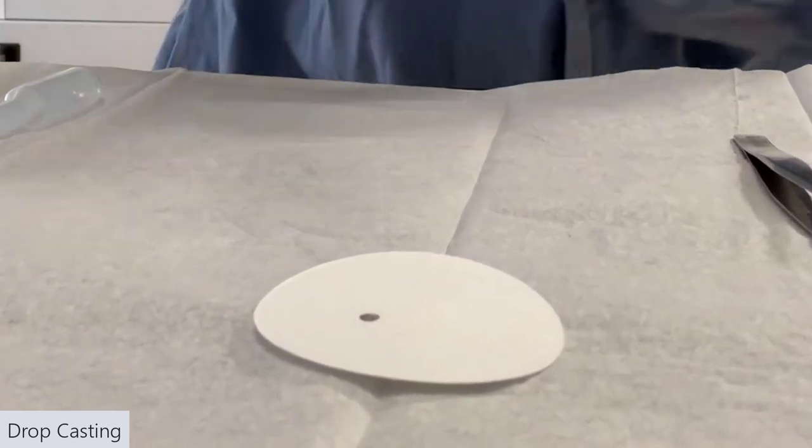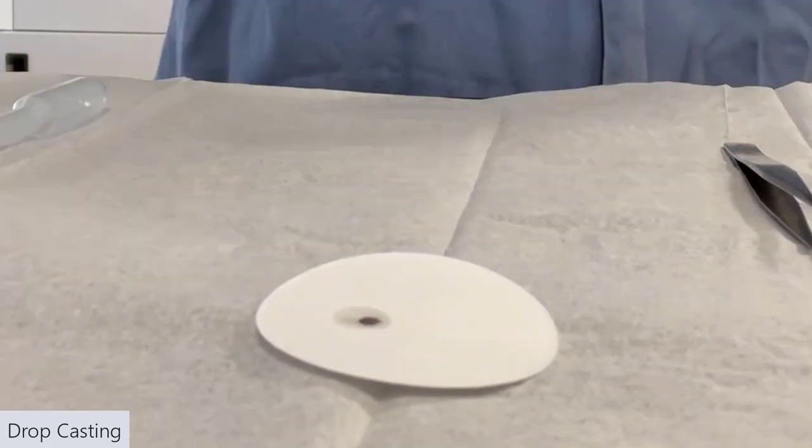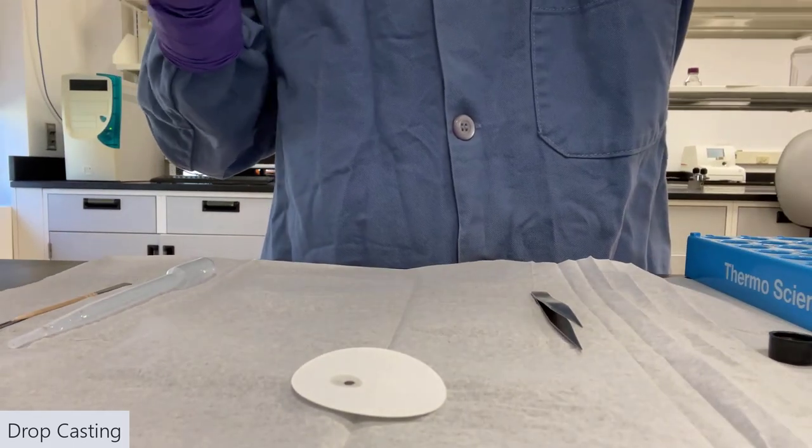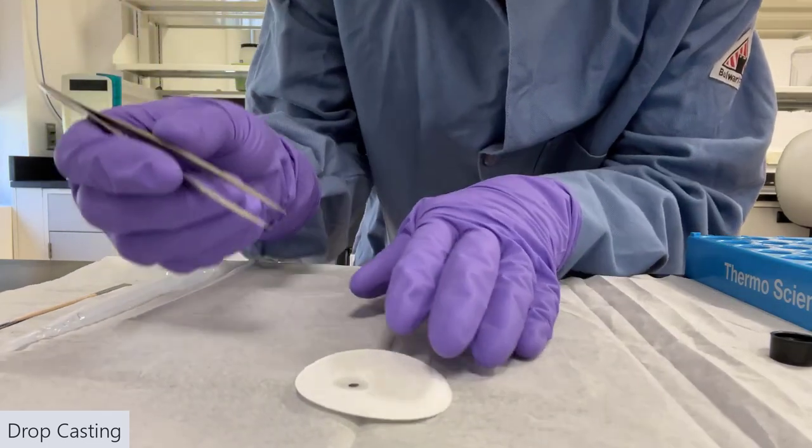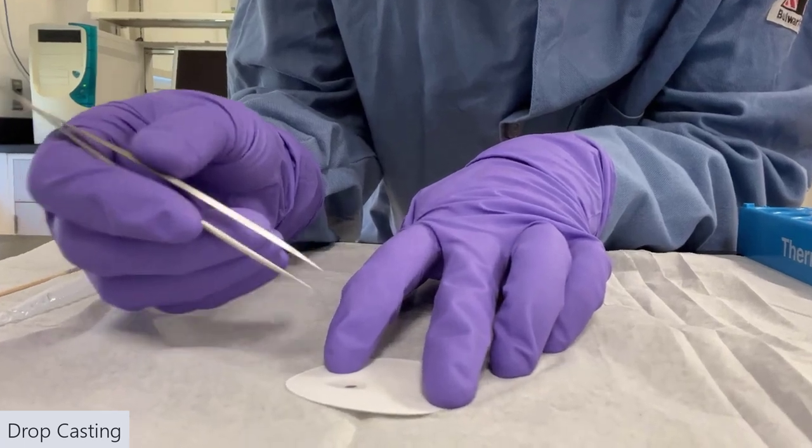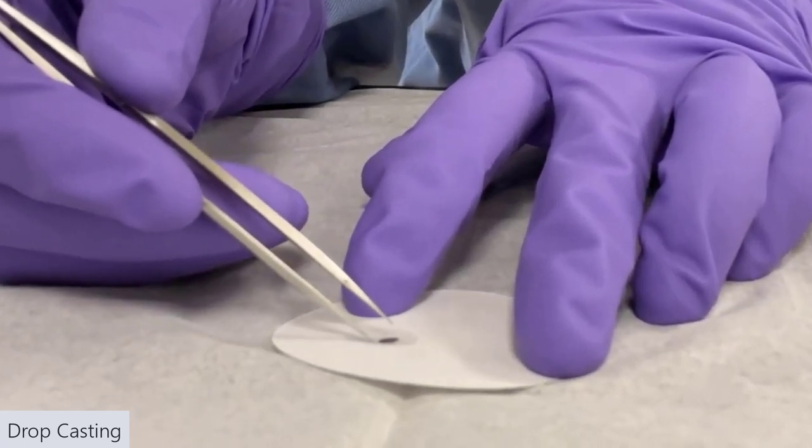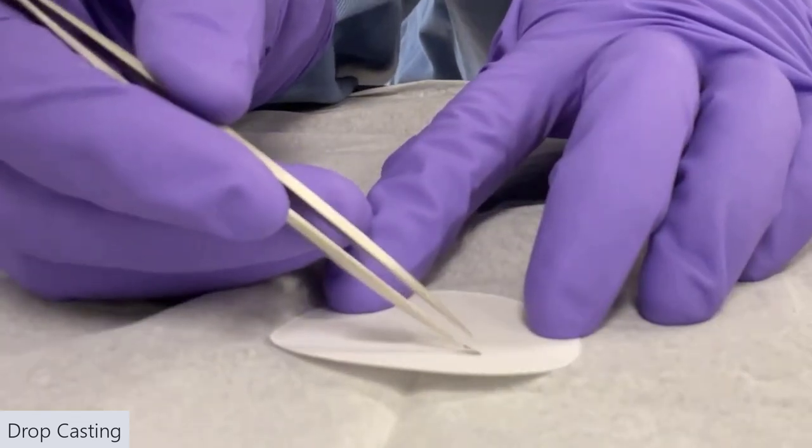So once we have enough to do a droplet, you put one drop on the grid. Make sure that it soaks into the paper. Sometimes with DI water, if that's what you're using as your solvent, you'll need to do a few drops for it to soak into the paper. Ideally, you do one drop and then move the grid to a dry, clean part of the filter paper.